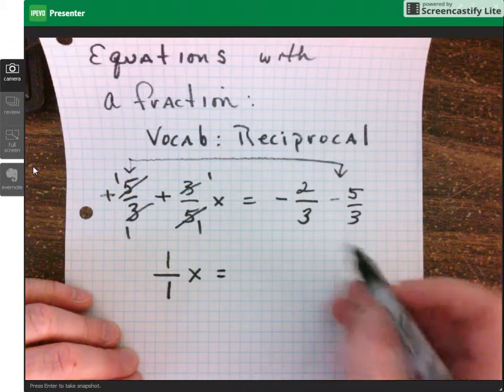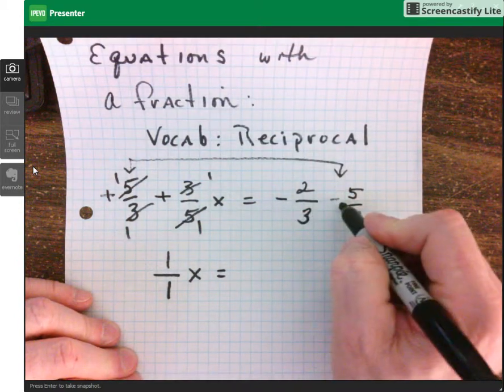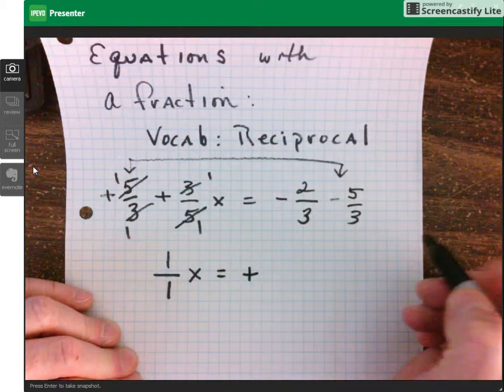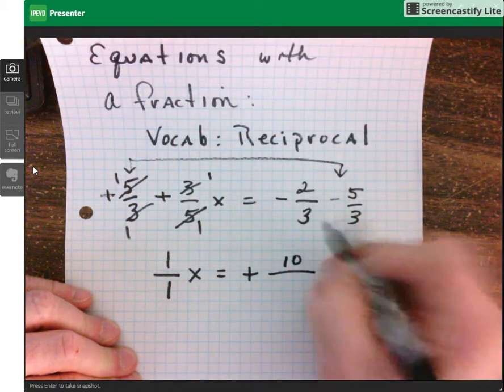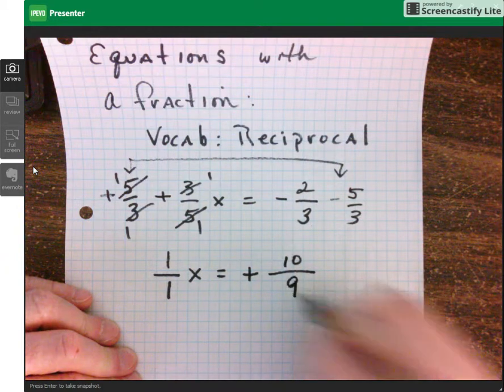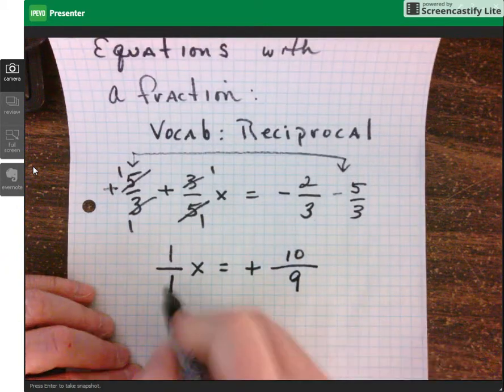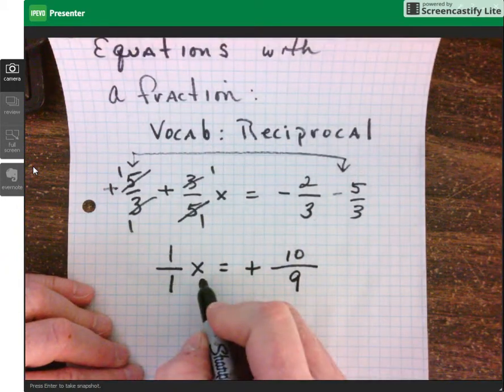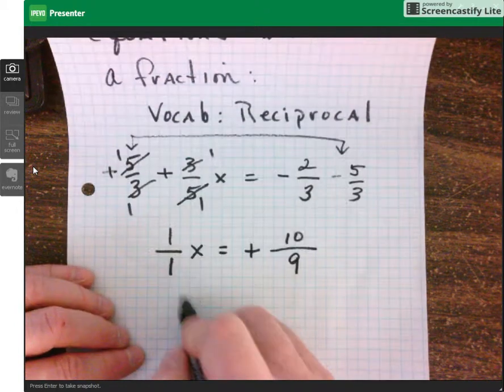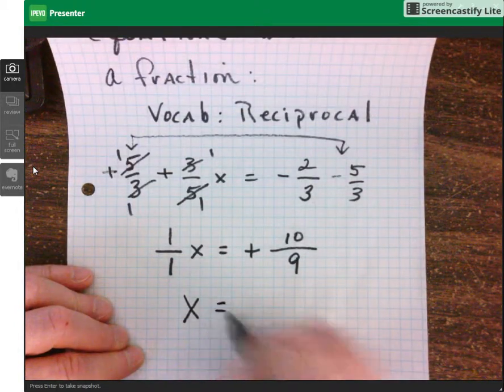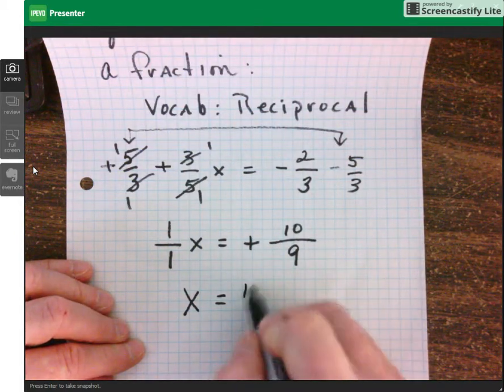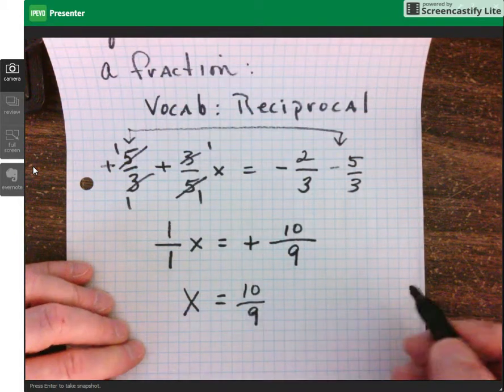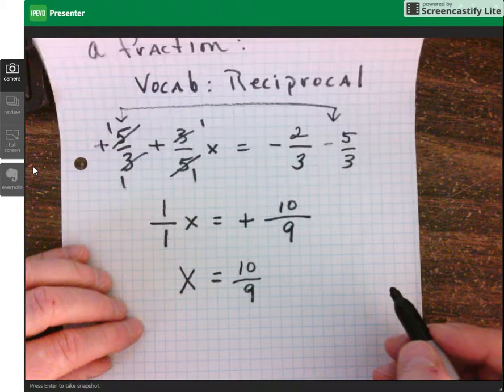Okay, over here, well, negative times negative equals positive. In the numerator I've got 2 times 5, which is 10. I've got 3 times 3, which is 9. Okay, 1 over 1 times x. 1 times anything is itself. So x equals positive 10 over 9. We don't need the positive sign. We can simply write 10 over 9.